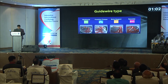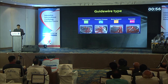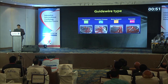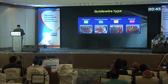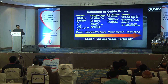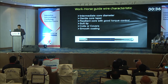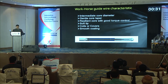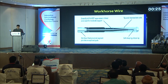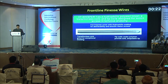Guide wire types: we typically use four types. For straightforward lesions, we use workhorse guide wires. For frontline cases, for angulated and tortuous lesions, and complex lesions, we use extra support wires. For CTOs, specialty wires are used. Workhorse guide wire characteristics: intermediate core diameter, gentle core taper, resilient core with good torque control, soft tip coils and covers, and smooth coating.